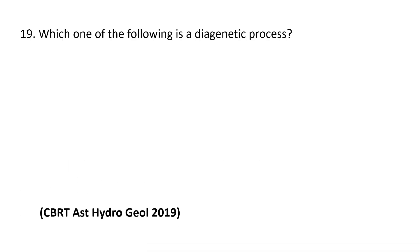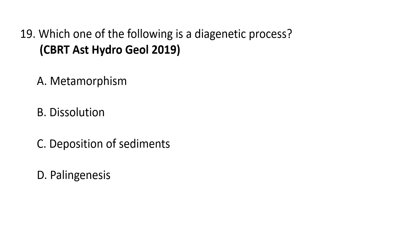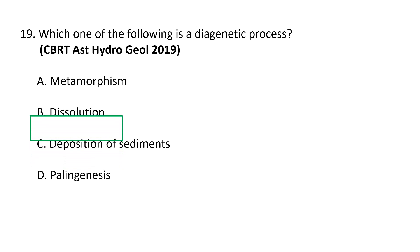Next question: which one of the following is a diagenetic process? a) metamorphism, b) dissolution, c) deposition of sediments, d) palingenesis. The correct option is b) dissolution. Dissolution is a diagenetic process; diagenesis refers to the physical and chemical changes that occur during the conversion of sediment to sedimentary rock, including processes such as mineral dissolution, precipitation, and compaction.